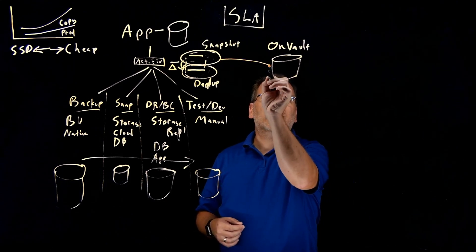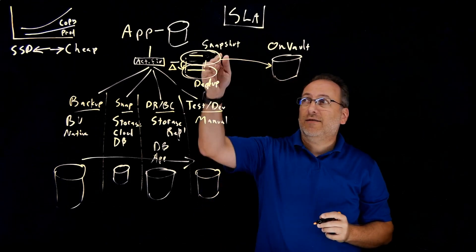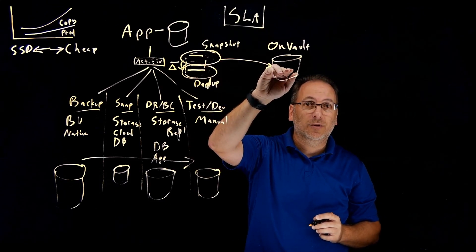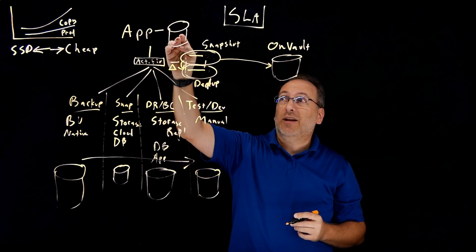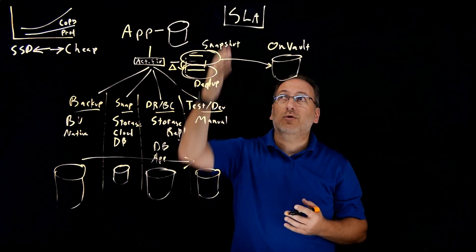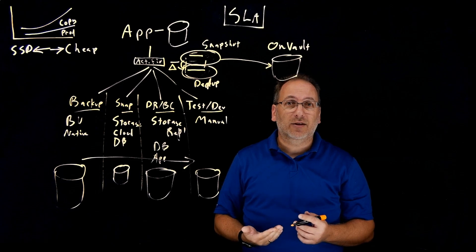And just like the SLA engine puts data from Snapshot into Dedup, it also can put data from Snapshot into OnVault. We also have the ability for some data to go directly to Dedup or directly to OnVault, all depending on what you've defined in your SLA engine.